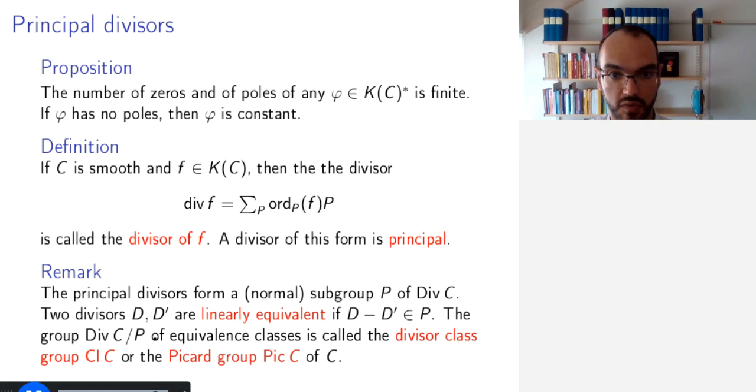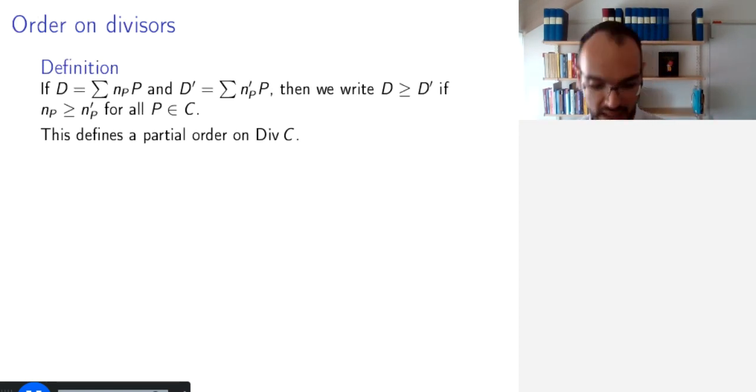Well, we call two divisors linearly equivalent if their difference is principal. And the quotient group of these equivalence classes is called the divisor class group, CL(C), or the Picard group, Pic(C). There's a more general definition of the Picard group, but in this setting, this is what it is.